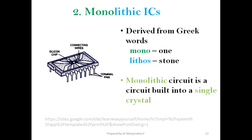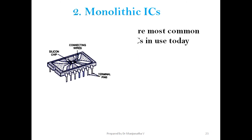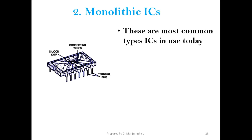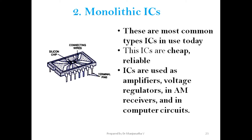The word monolithic is derived from the Greek words: mono meaning one, and lithos meaning stone. A monolithic circuit is a circuit built into a single crystal. These are the most common types of ICs used today — they are cheap and reliable. Monolithic ICs are used as amplifiers, voltage regulators, in AM receivers, and in computer circuits.